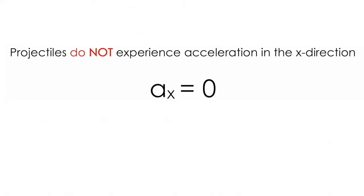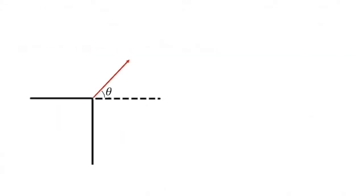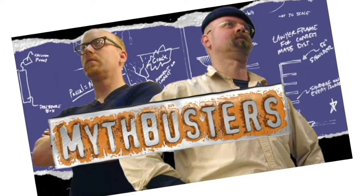Lastly, projectiles do not experience acceleration in the x direction. This is just another way of saying they do not speed up or slow down in the x direction. Again, this is another counterintuitive property. People seem to think that because the object is being pulled to the ground it's slowing down. Again, the Mythbusters debunk this myth better than I ever could.